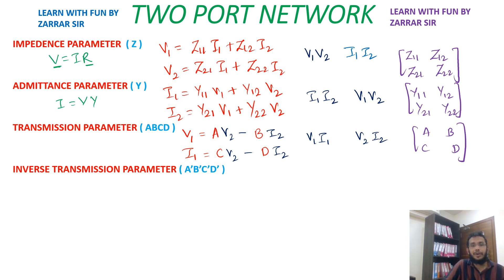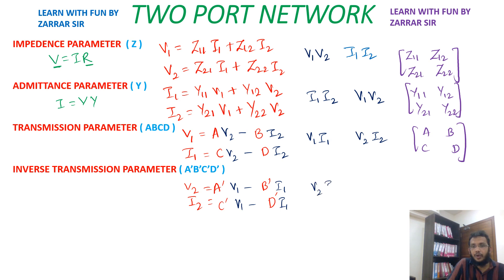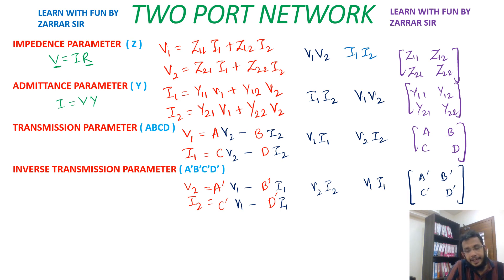The next parameter is the inverse transmission parameter, represented as A', B', C', and D'. Here, instead of calculating V1 and I1, we calculate V2 and I2. So: V2 = A'·V1 - B'·I1, and I2 = C'·V1 - D'·I1. In inverse transmission parameter, V2 and I2 are calculated with the help of V1 and I1, and the parameters are A', B', C', and D'.